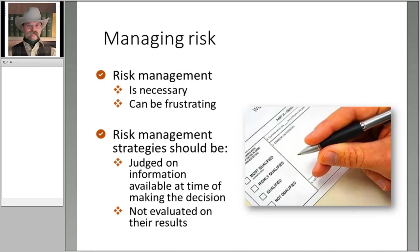Risk management might be described as a necessary but sometimes frustrating activity. Even very good risk management strategies can still lead to a bad outcome due to the uncertainty of how the future will actually turn out. As a result, the quality of a risk management strategy should be judged based on the information available at the time the strategy is selected and not solely on the final result. Although results are obviously important, even high quality risk management strategies don't come with guarantees in the face of significant uncertainty. Good strategies should lead to more positive results more consistently, we might hope.